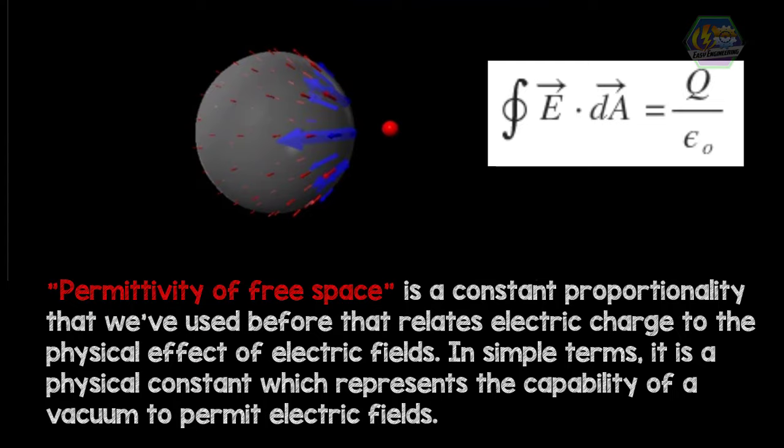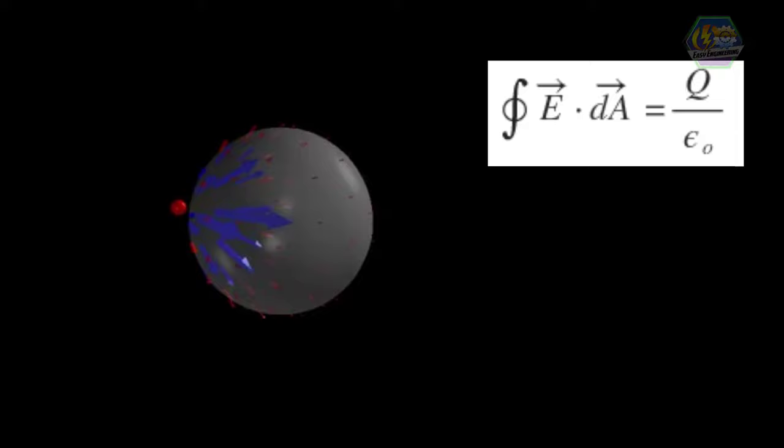If the electric field is constant over the surface, then the left side of the equation becomes E times A.